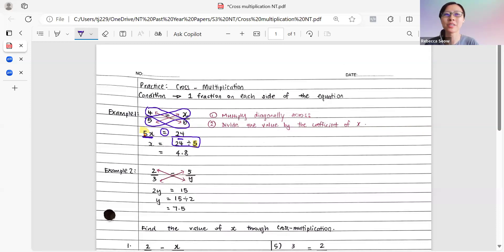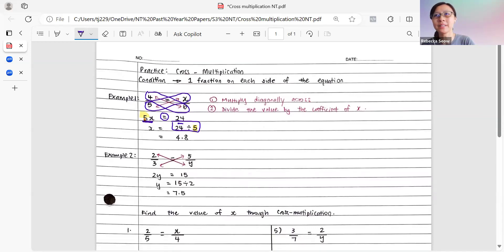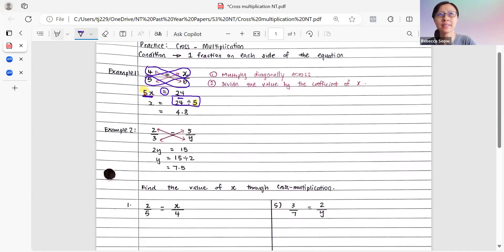So that's the process of cross-multiplication. Now, there is another example question that we will refer to. And here, it says that 2 out of 3 is equals to 5 out of y. So first step is to draw in the diagonals, 2 to y and 3 to 5.